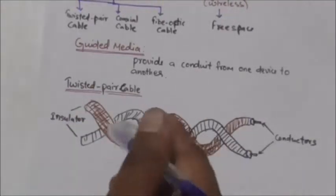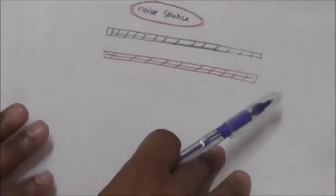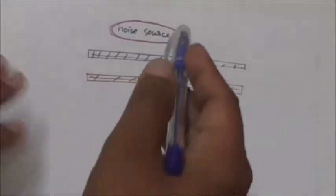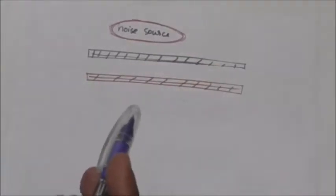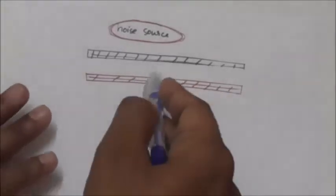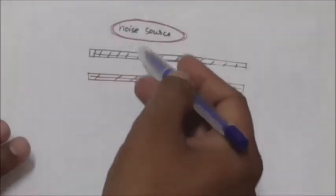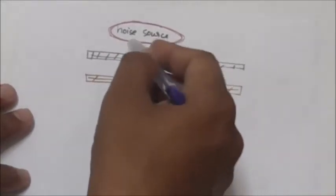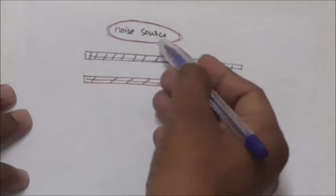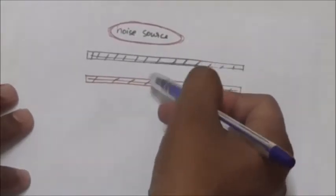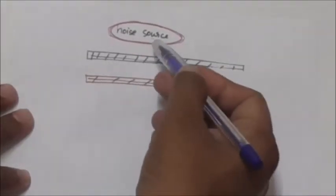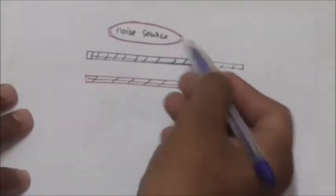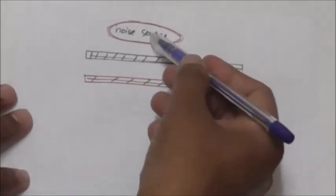If these two wires are parallel, the effect of unwanted signals is not the same in both wires, because they are at different locations relative to the noise or crosstalk source. One wire is closer and the other is farther from the noise or crosstalk sources, which results in a difference at the receiver.